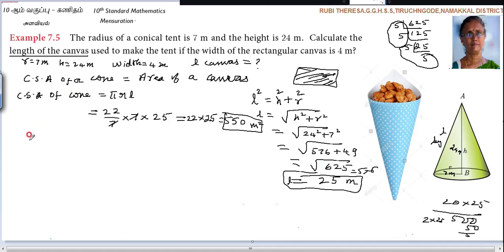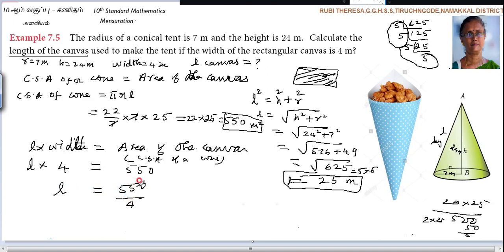Now we know curved surface area of the cone is equal to area of the canvas. Area of the canvas is length into width. Area of the canvas is CSA of a cone, which is 550. Length is equal to 550 divided by 4.